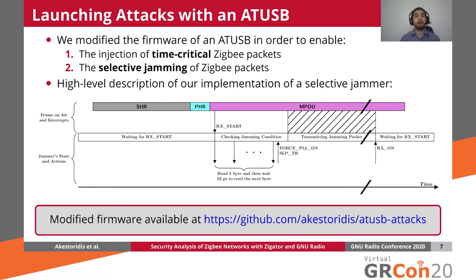So in order to achieve that, we modified the firmware of our ATUSB as follows. First of all, the ATUSB waits for an RX start interrupt, which is typically issued a few microseconds after our ATUSB receives a PHY header. When the RX start is received, the ATUSB can then retrieve the length of the packet that is being transmitted. And then, by introducing a 32-microsecond delay, the ATUSB can retrieve the next byte of that packet. By repeating that process, the ATUSB can retrieve all the bytes required in order to determine whether its predefined jamming condition is satisfied or not.